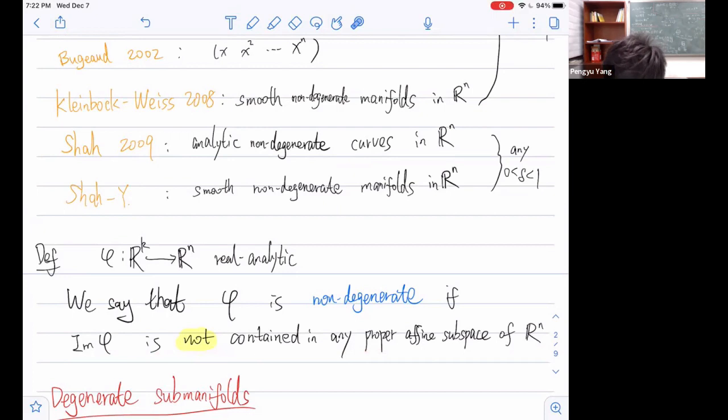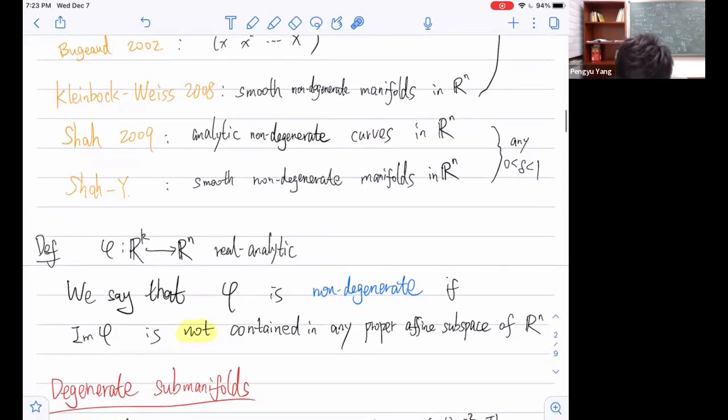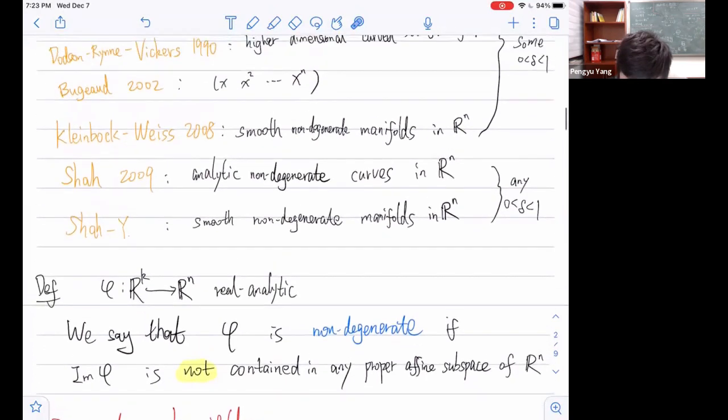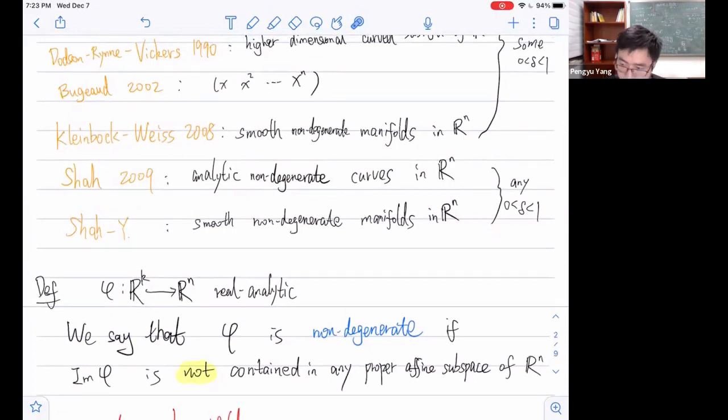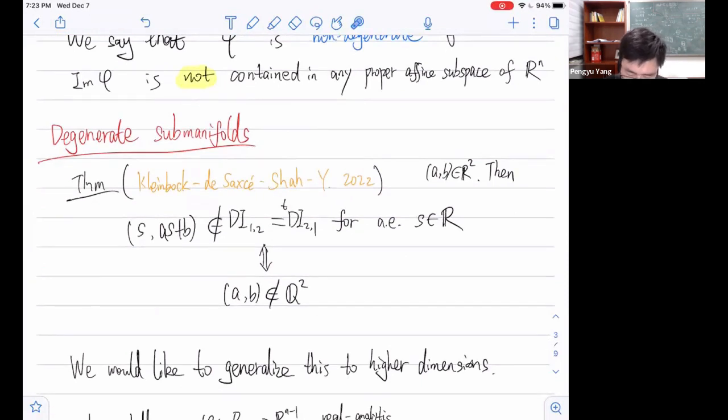Then in 2009, based on work of Kleinbock and Weiss, Shah showed that for analytic non-degenerate curves in R^n, the set of Dirichlet improvable vectors has Lebesgue measure zero. By non-degenerate, we mean that the image is not contained in any proper affine subspace of R^n. As Nimish has explained in the morning, we generalized in another direction. We looked at smooth non-degenerate manifolds in R^n and considered weighted approximations. We also got the same result that it is Lebesgue measure zero. But today I will focus on the real analytic submanifolds.